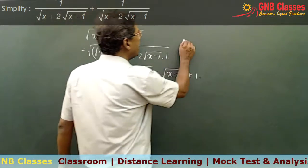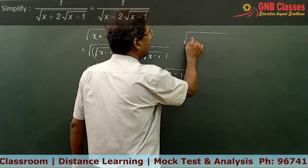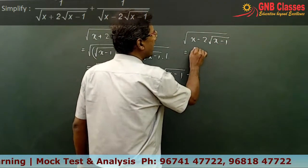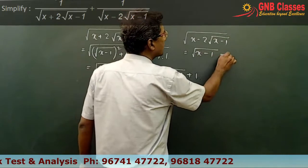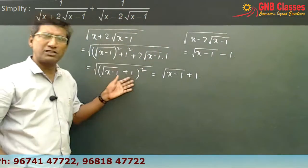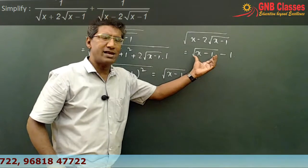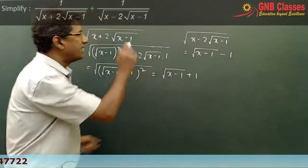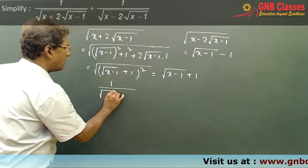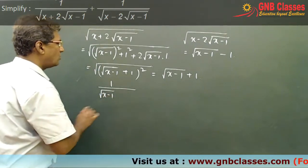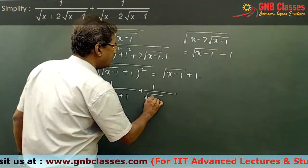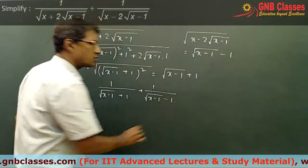Similarly, if we try to simplify the second part, in that case we are going to get under root x minus 1 minus 1, using the same method. Therefore, our problem actually becomes 1 by under root x minus 1 plus 1, plus 1 by under root x minus 1 minus 1.